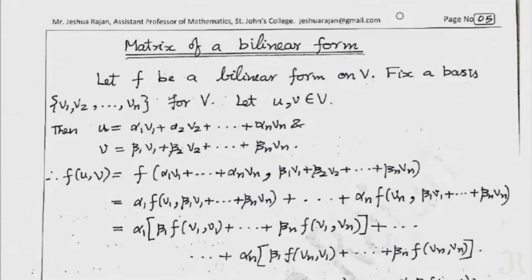Welcome friends. Last lecture we explained a bilinear form. Just recall: f is a function from V cross V to F, where V is a vector space over a field F. The function f from V cross V to F is said to be bilinear if: f of alpha u1 plus beta u2, comma v, equals alpha times f of u1 comma v plus beta times f of u2 comma v. Similarly, the second argument is linear: f of u comma alpha v1 plus beta v2 equals alpha f(u,v1) plus beta f(u,v2).